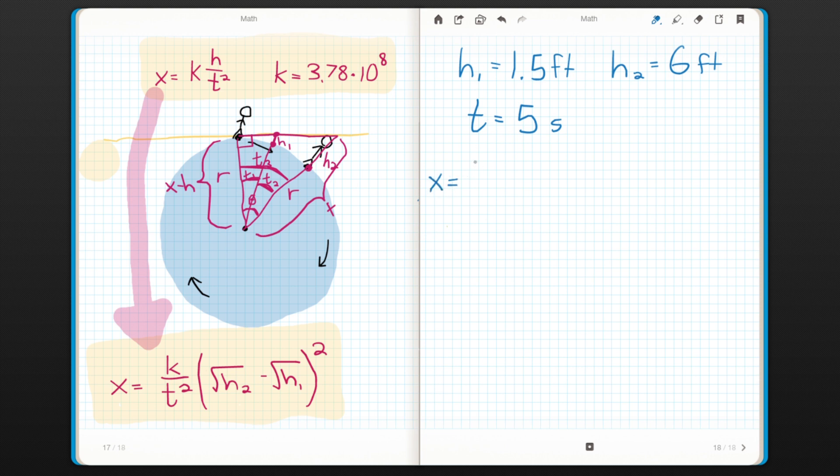h1 is one and a half feet, h2 is six feet, and the t is five seconds. Now we just plug that all into our equation. k is still 3.78 times 10 to the eighth. t squared is five squared. The square root of h2 is the square root of six. The square root of h1 is the square root of 1.5. We'll square that, and I plug it into my calculator, and I come up with 1.85 times 10 to the seventh feet. Now we want that in miles, so we'll divide by 5,280, and we end up with 3,500 miles is the radius of the earth.